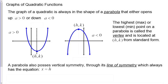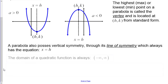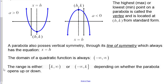The axis of symmetry is generally drawn as a dashed vertical line passing through the x-coordinate of the vertex, so its equation is always x = h, regardless of whether the parabola opens up or down. The domain of a quadratic function is always negative infinity to positive infinity. The range is either from k up to positive infinity, or negative infinity up to k.